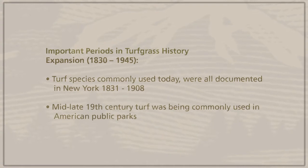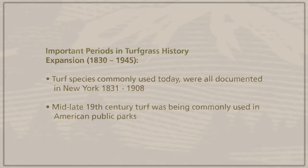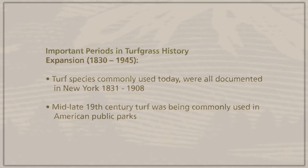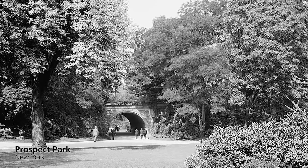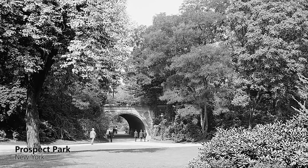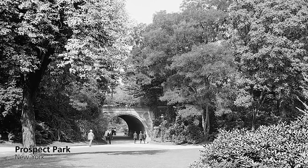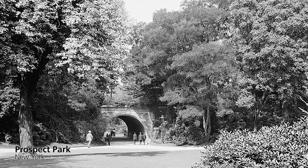By the mid to late 19th century, turf was being commonly used in American public parks. One example is Prospect Park in Brooklyn, New York — again, a large city park designed by Frederick Law Olmsted in the 1860s and 1870s.